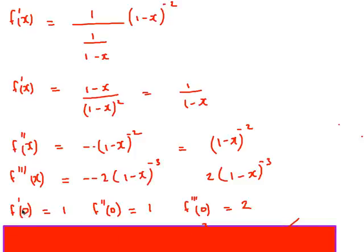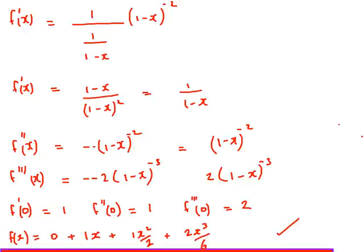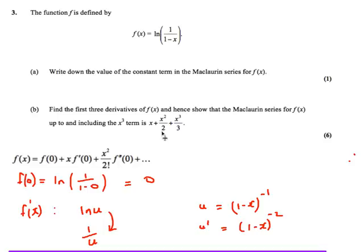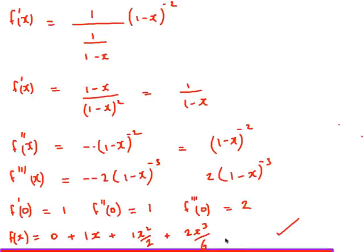Then all I need to do is see what happens when I evaluate at 0. f dash of 0: I put 0 into this, and I get an answer of 1. When I put 0 into my second derivative, I get an answer of 1. And when I put 0 into the third derivative, I get an answer of 2. So these are the three values that I need. All I need to do now is just put these into my formula. It's x times the first differential, then 1 times x squared over 2 factorial, and then 2 times x cubed over 3 factorial, which 3 factorial is 6. So I end up with 0 plus x plus x squared over 2 plus 2x cubed over 6. And that's what I was asked to find.